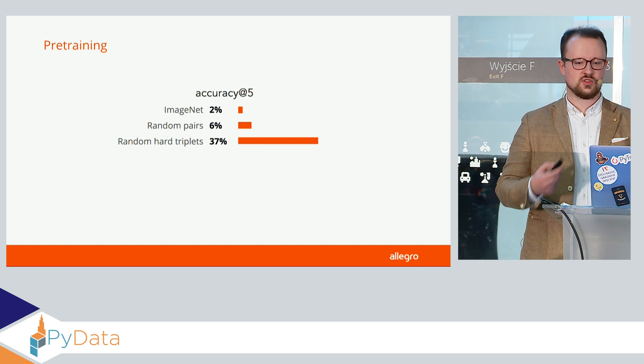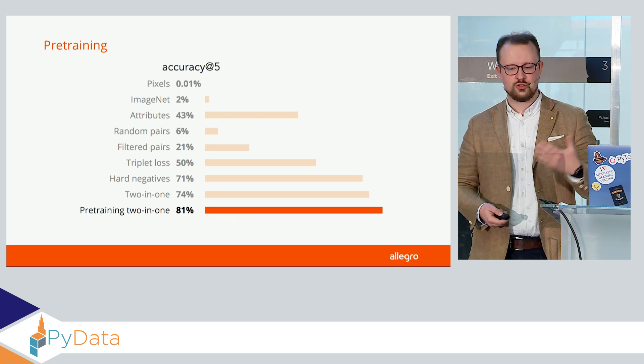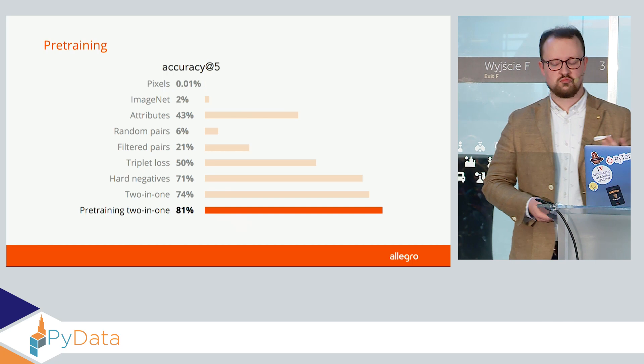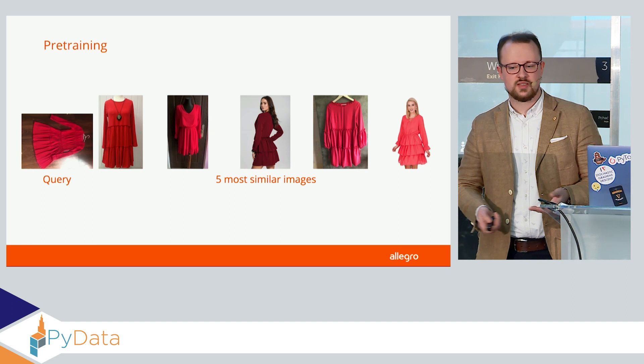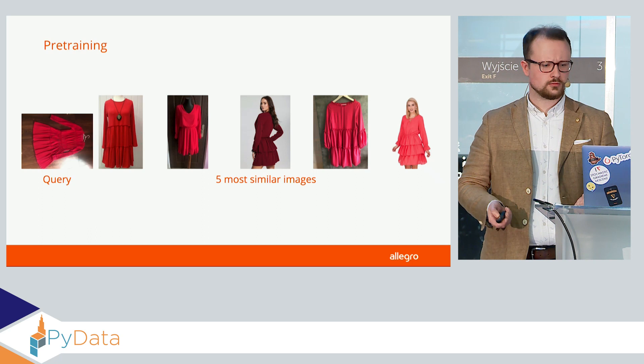Let's combine it with our model that combines attribute prediction and triplet loss. In the end we have a pre-trained two-in-one model which gets 81% accuracy. All dresses have pretty much the same cut, the same length of sleeve, they are all almost red, and to me they look really good.